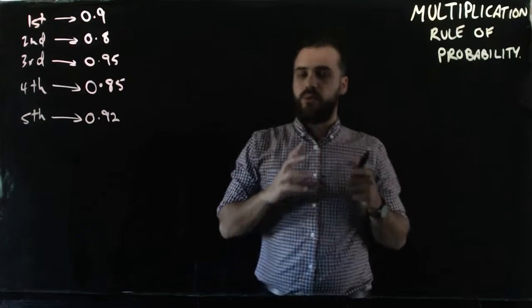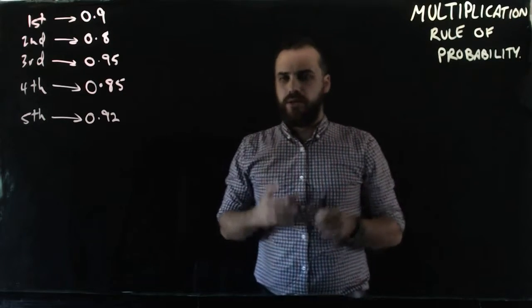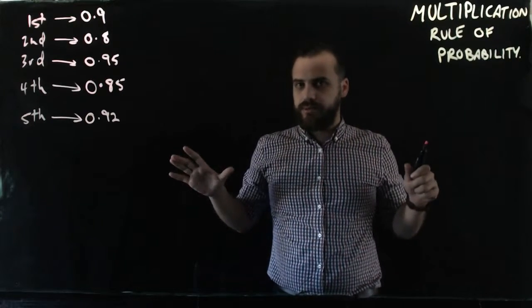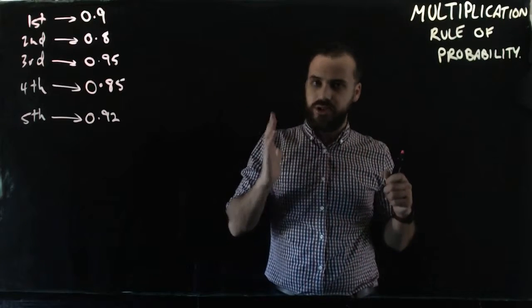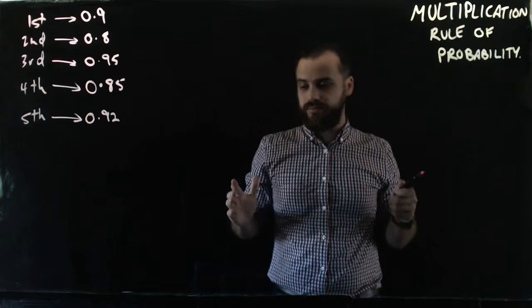The question I'm asking is: what is the probability that we get a clean sweep? That firsts, seconds, thirds, fourths, and fifths all win their game.